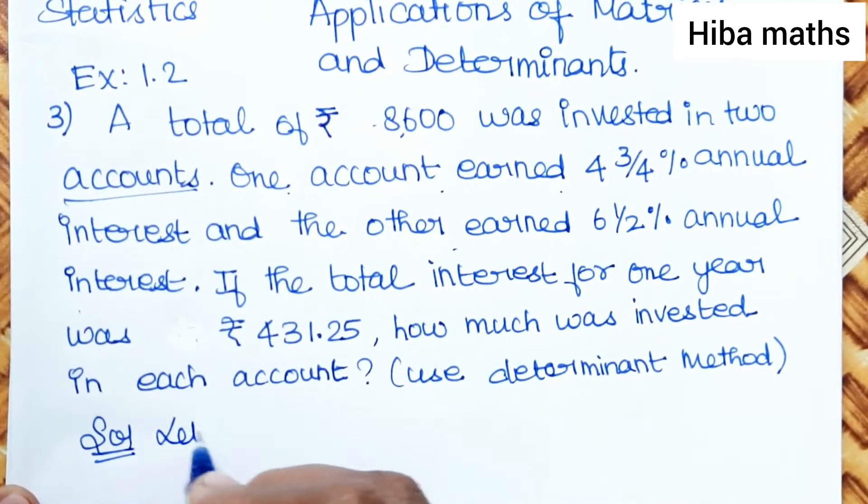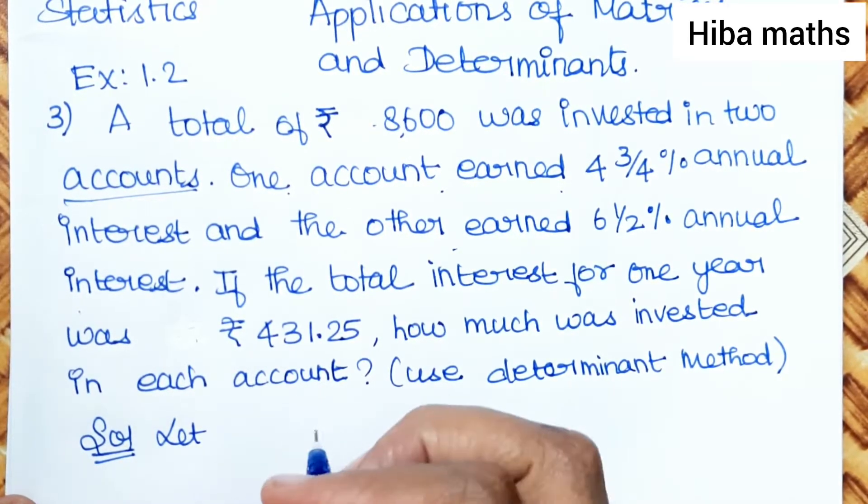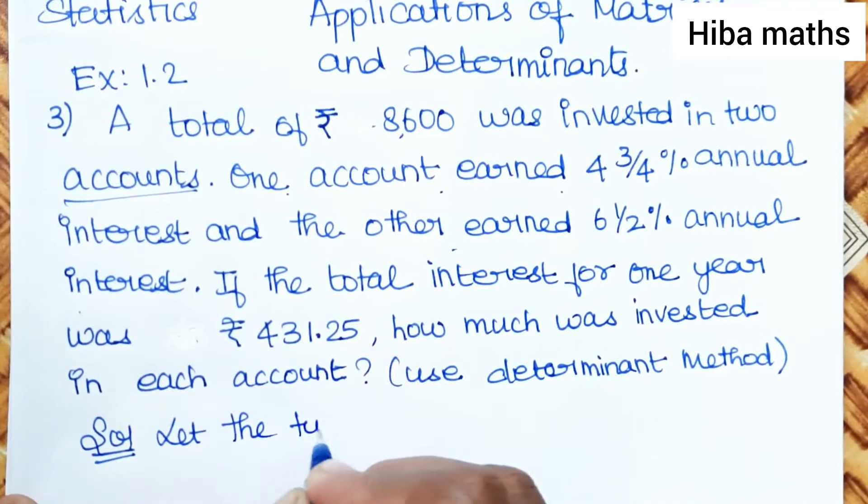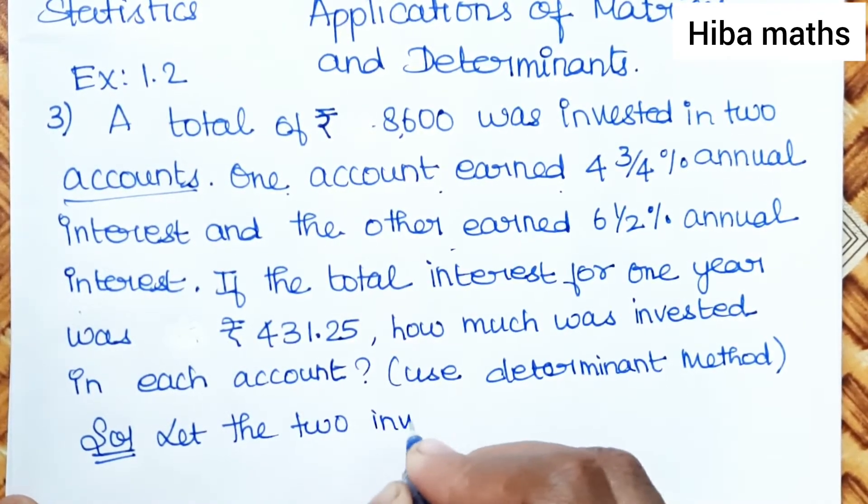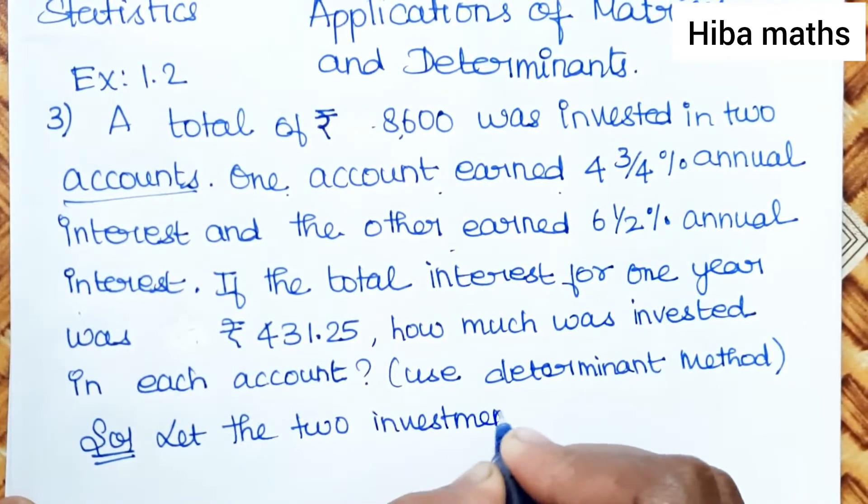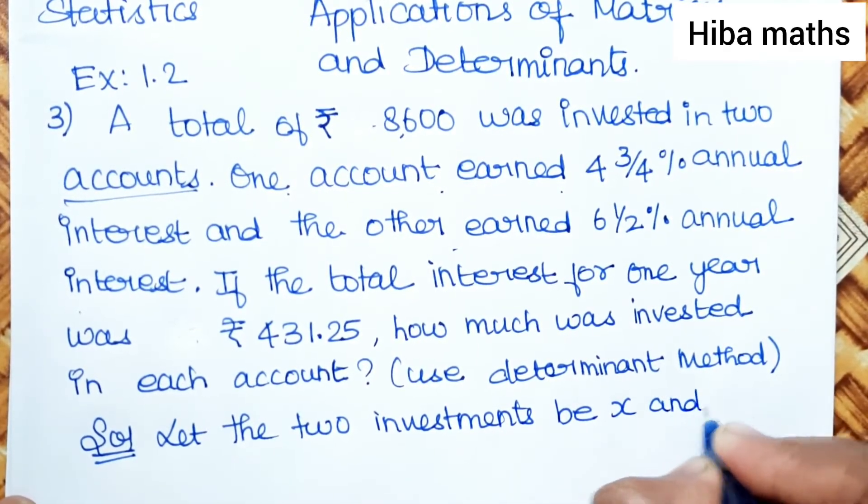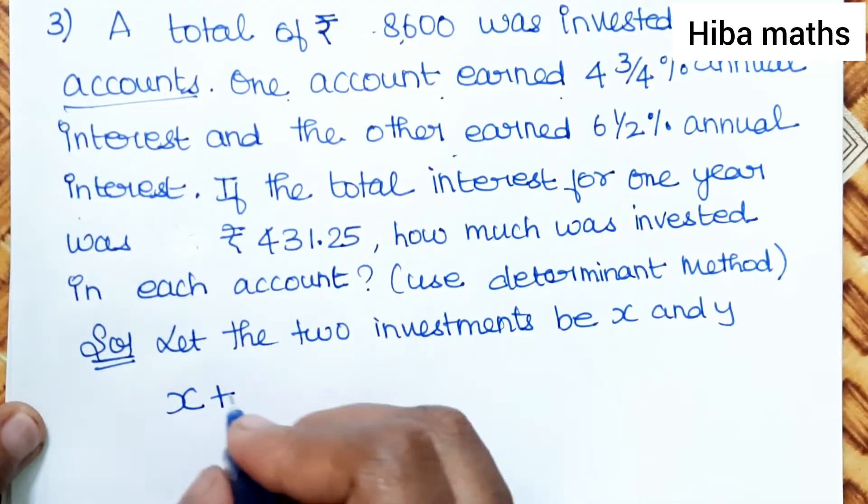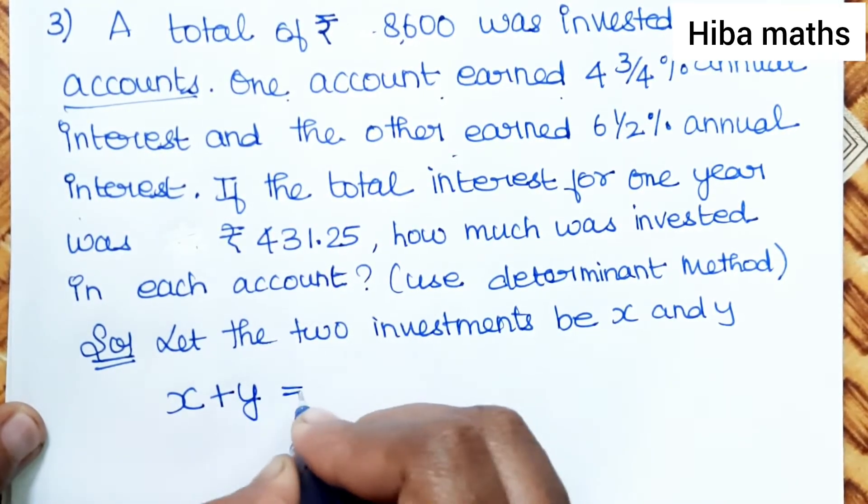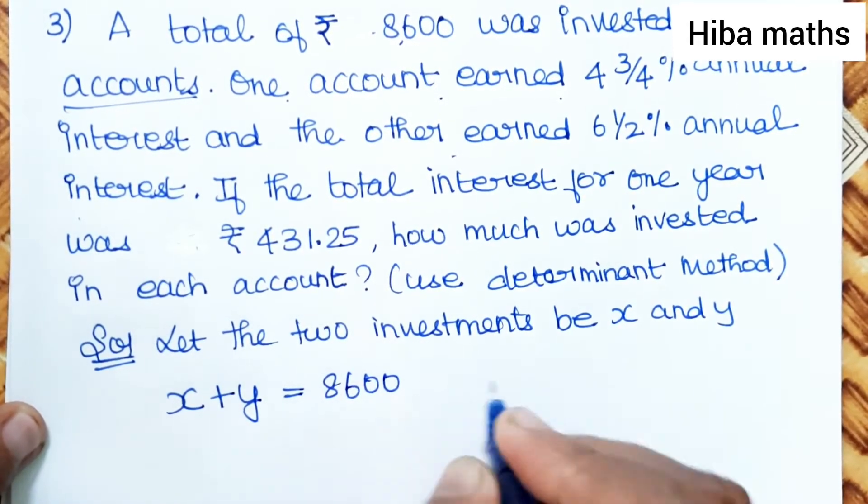First statement: Let the two investments be X and Y. X plus Y is equal to 8,600.